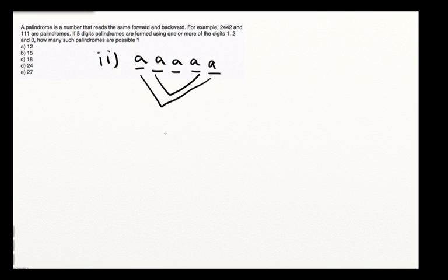The second route also pays attention to the fact that we only have the first three spaces available. Let's just look at the slots: we have slots one, two, and three, and then the last two are just reflections of the first two, as we see in the diagram.